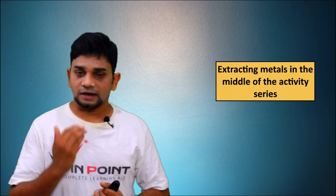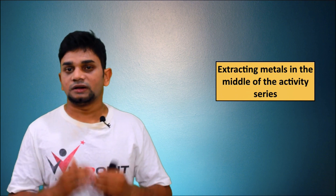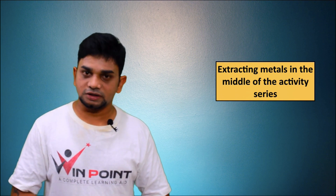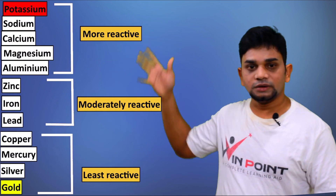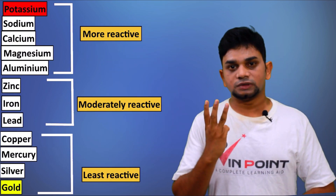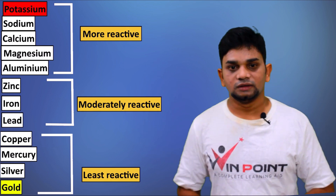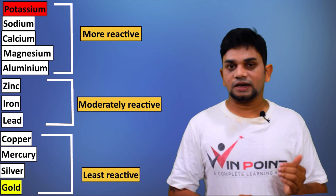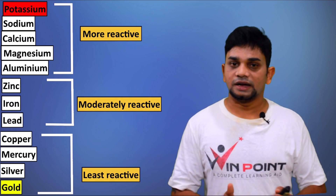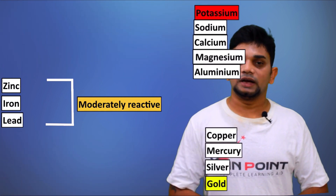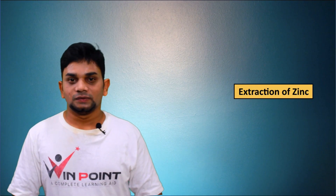Let's start the discussion. The activity series is the arrangement of metals according to reactivity. The most reactive metal is potassium and the least reactive metal is gold. There are three groups: more reactive metals, moderately reactive metals, and least reactive metals. Here we are going to discuss the extraction of metals which are moderately reactive, like zinc, iron, and lead.